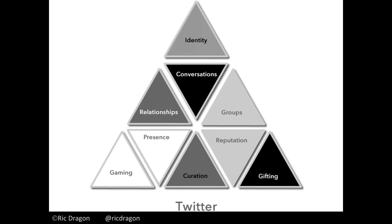One of the things in the book is the idea called the social media pyramid — a device we use to look at various social media platforms. Imagine that white represents one on a scale of one to five and black represents five. Black, or five, means it's very strong; white, or one, means it's very weak. We look at nine main components of social media and find they exist in different strengths on different platforms. For example, identity — your ability to flesh out your profile — would get a five on LinkedIn, but somewhere in the middle range on Twitter.